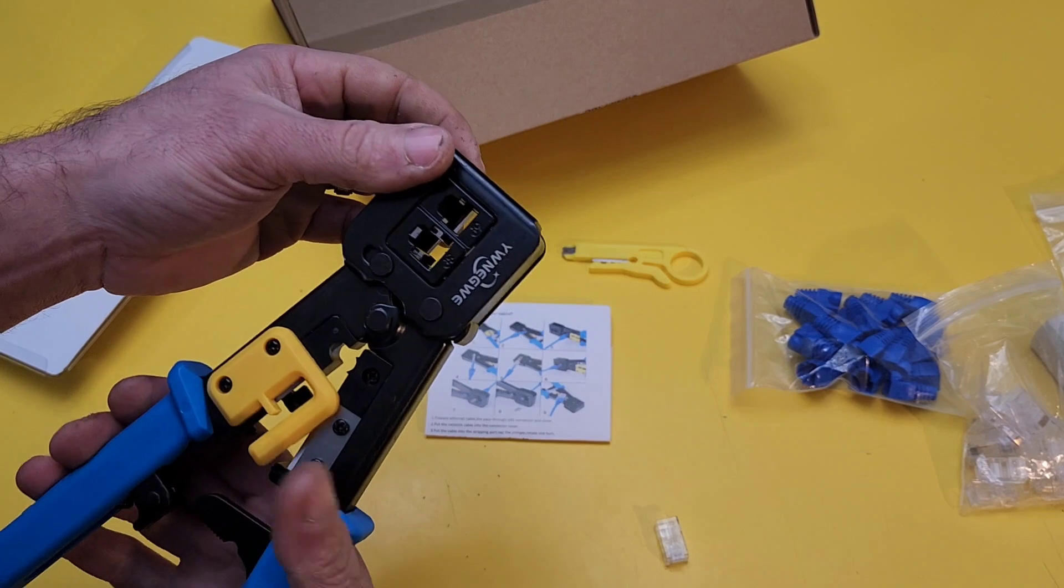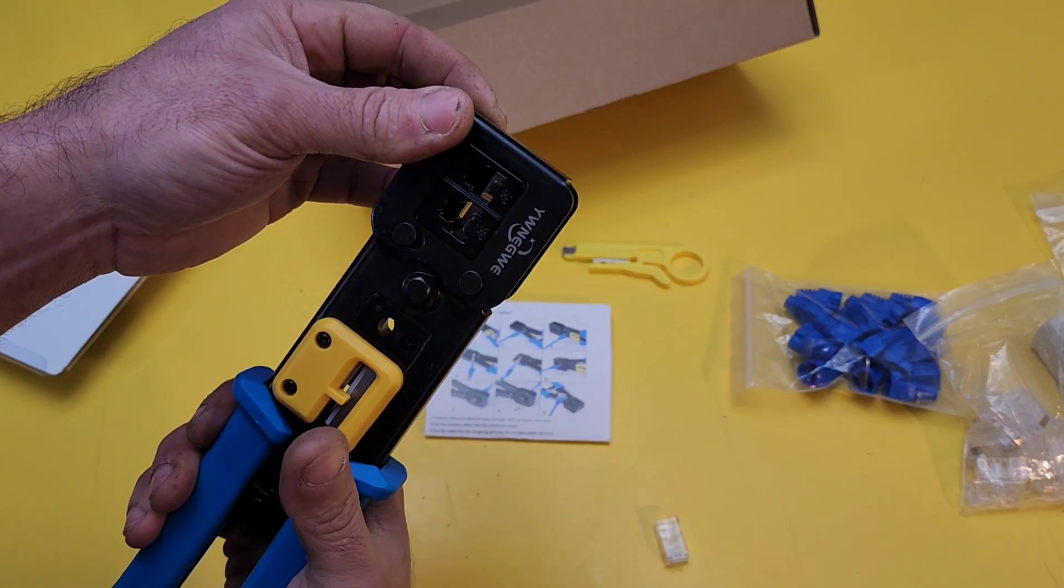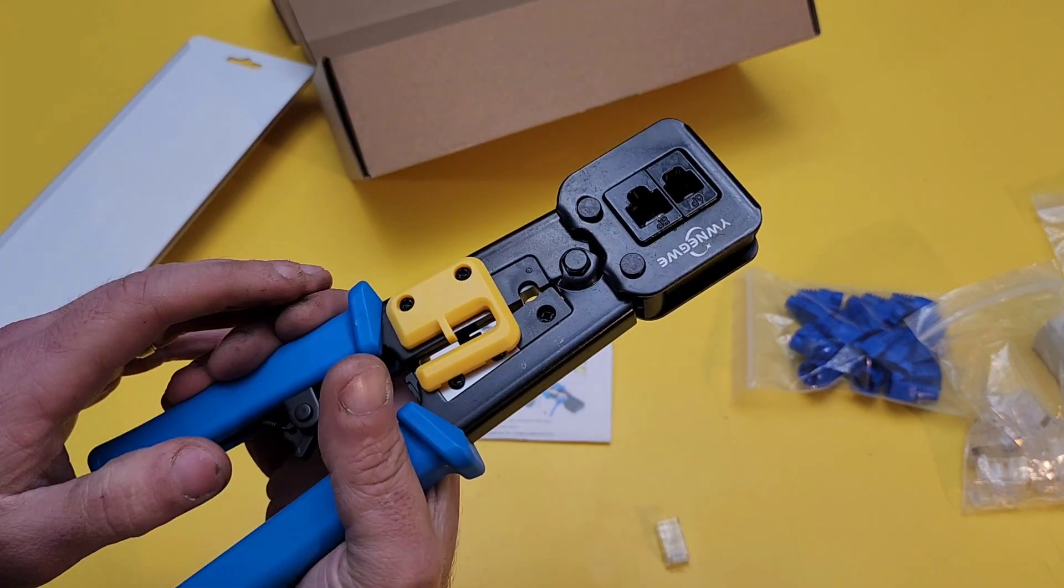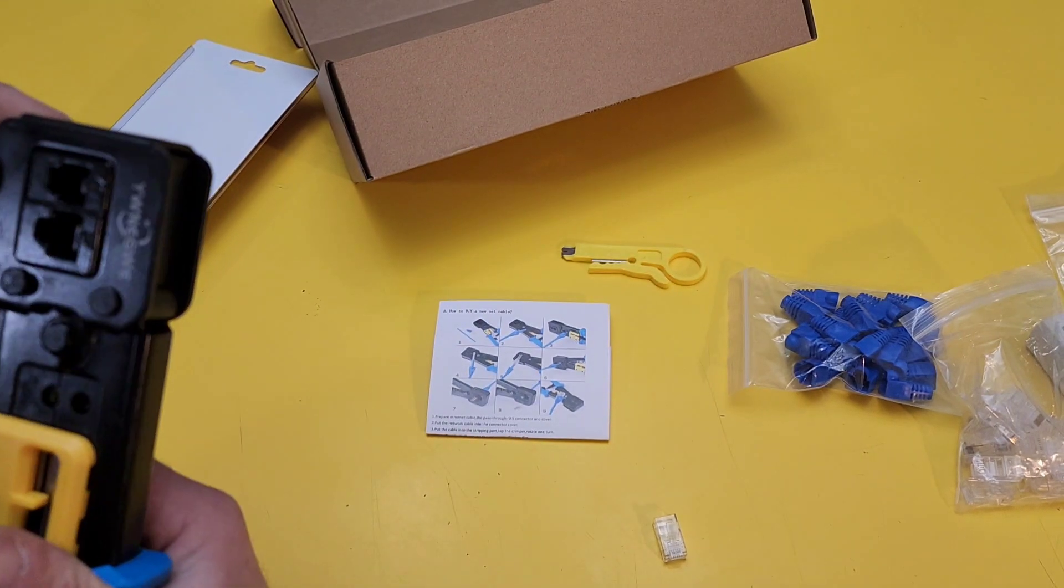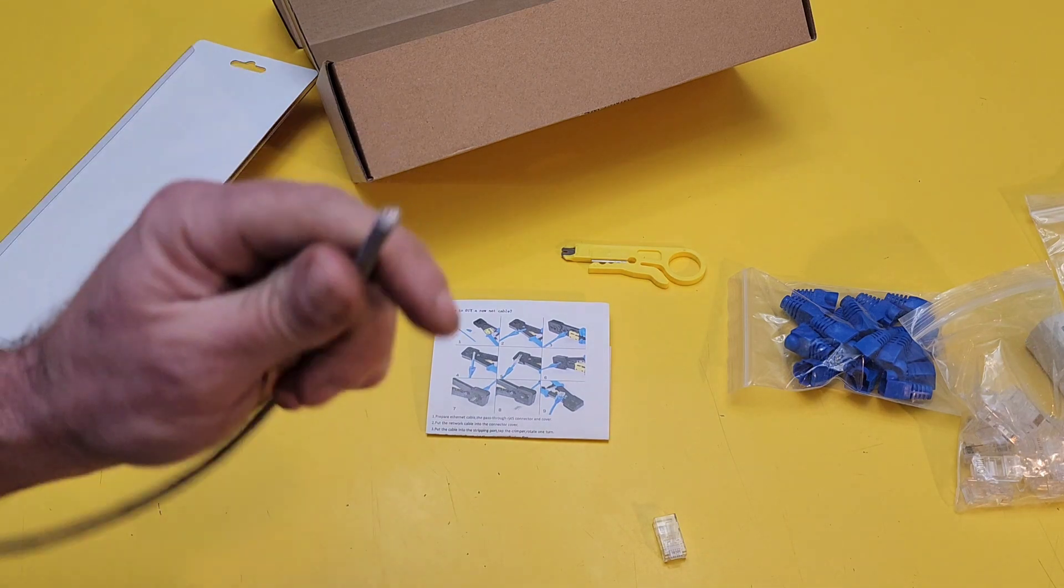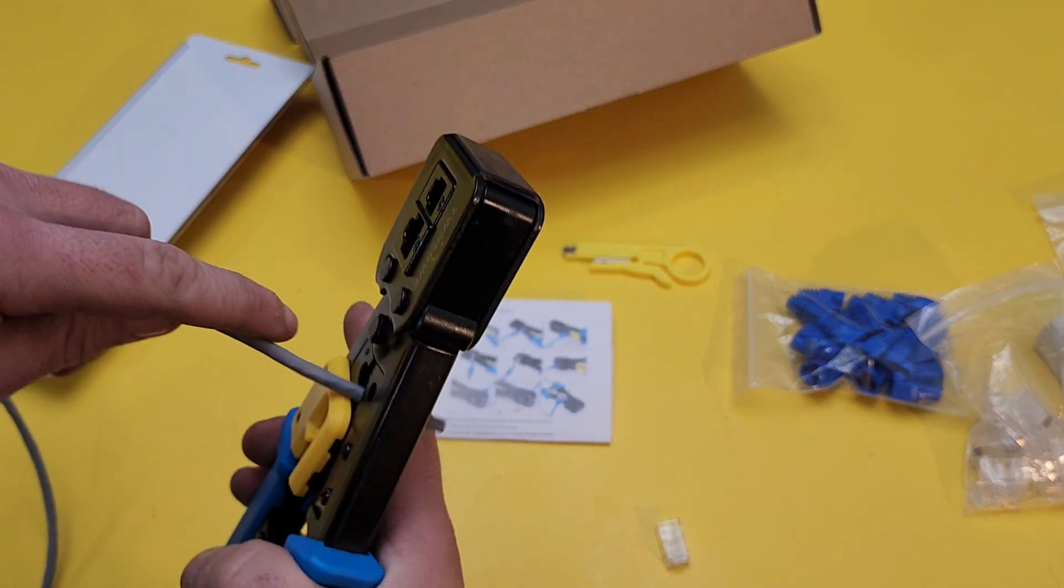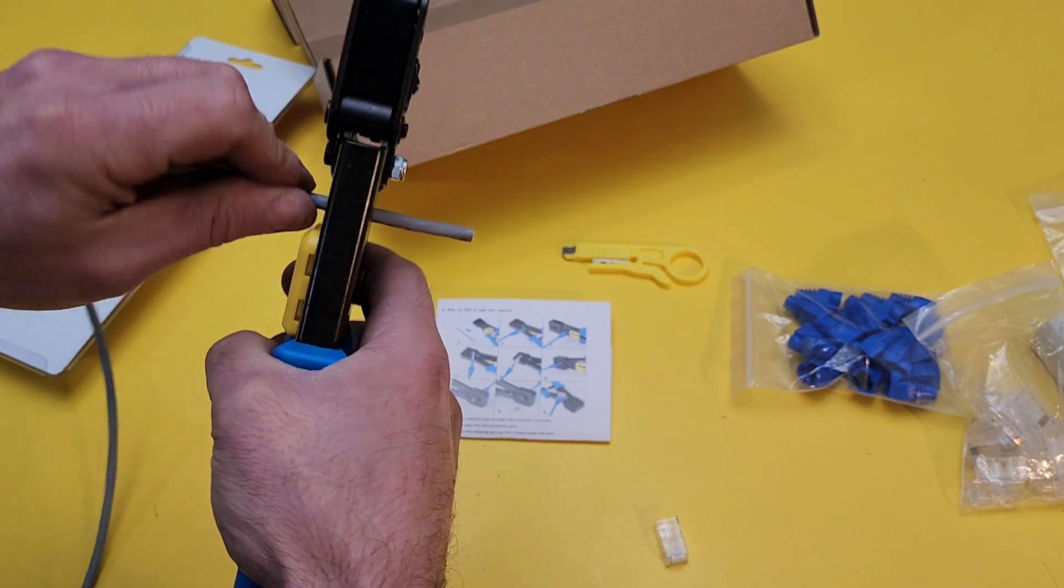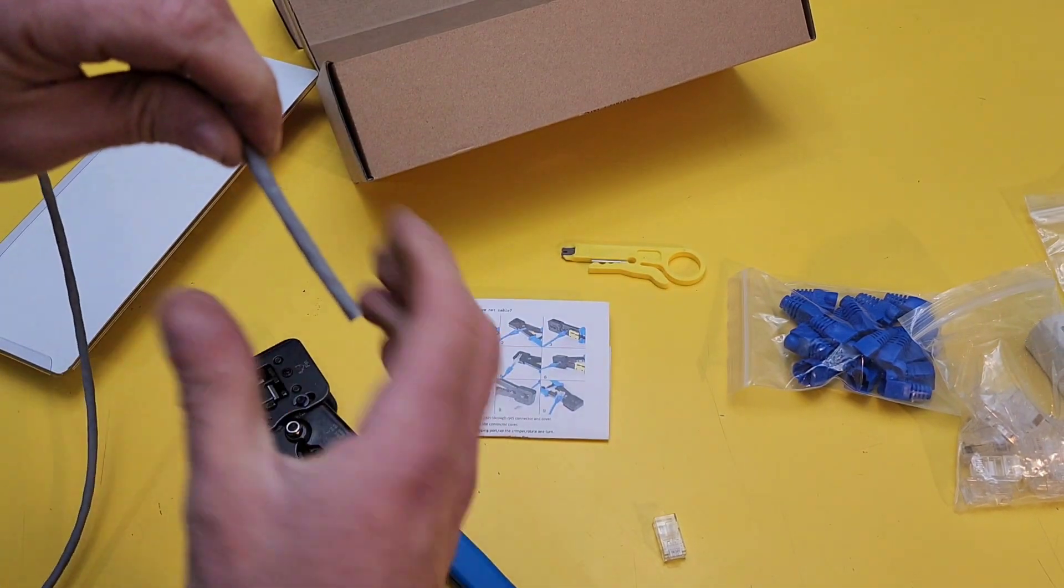Open up the tool real quick. You can hear it ratchet pretty good. I'm going to take a piece of Cat5e. That's what I've got. I always run it a little bit longer than however far you're supposed to run it. That way I've got plenty to work with.